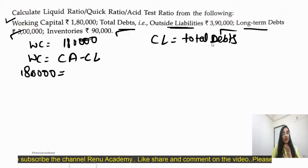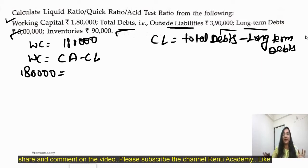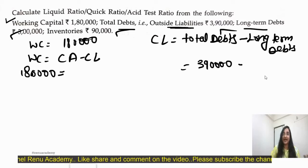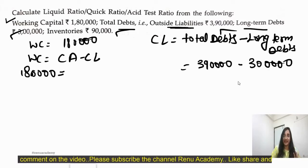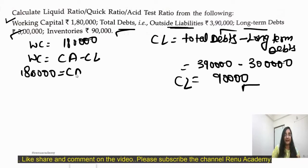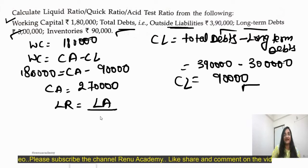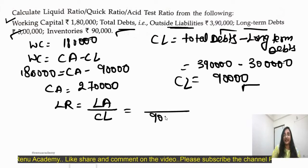We will subtract long-term debts from total debts. Current liability is payable within 12 months from the date of the balance sheet or within the operating cycle period. Total debts are 3,90,000 and long-term debts are 3,00,000, so the current liability figure comes to 90,000. With current liability as 90,000 and using the current ratio, current assets come to 2,70,000. The formula for liquid asset is: current asset divided by current liability, and current liability is 90,000.